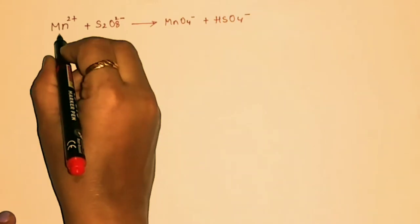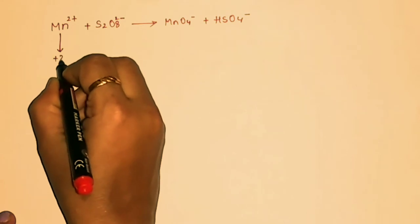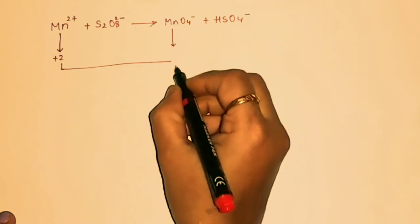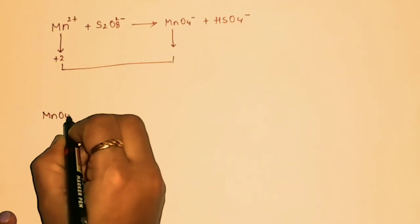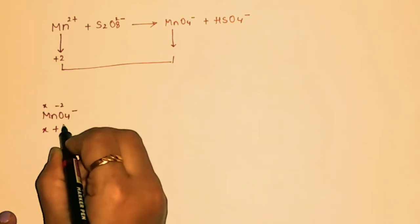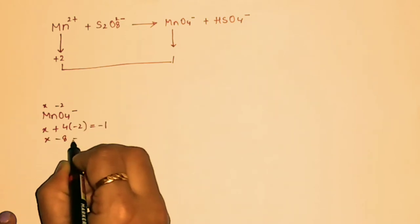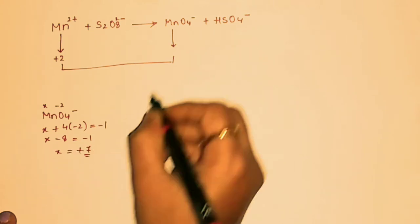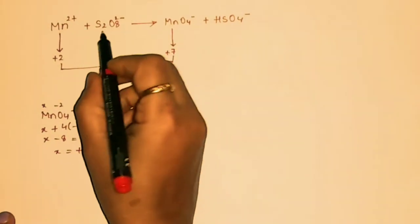First we need to find the oxidation numbers. The oxidation number of Mn is given as +2. We need to find the oxidation number of Mn in MnO₄⁻. Let x be the oxidation number: x + 4×(−2) = −1, so x − 8 = −1, therefore x = +7. The oxidation number of Mn in MnO₄⁻ is +7.